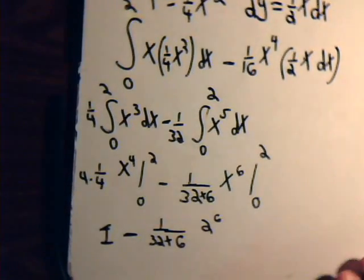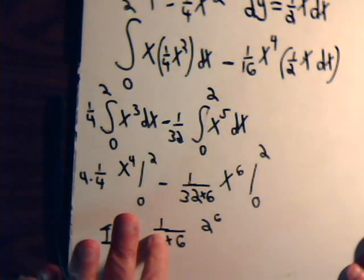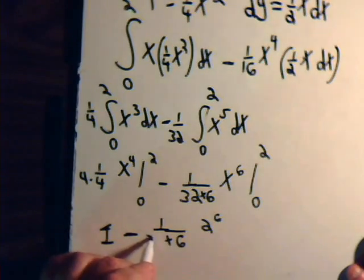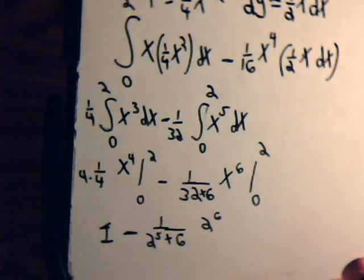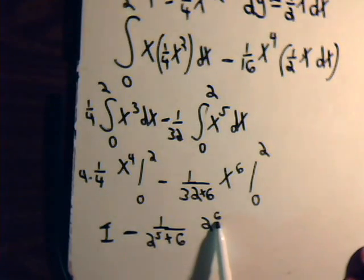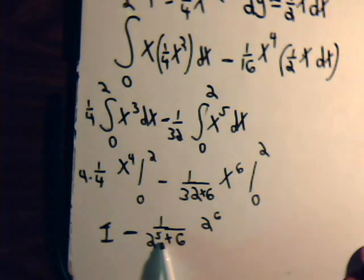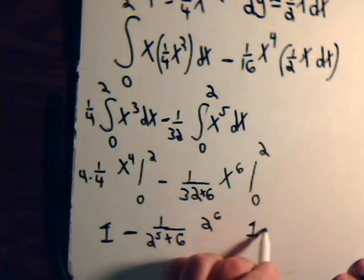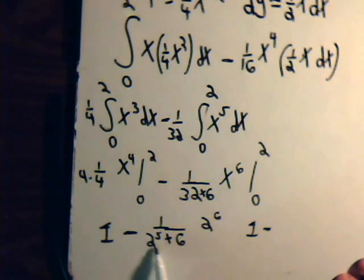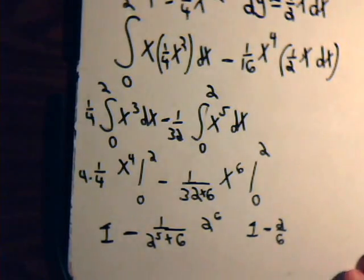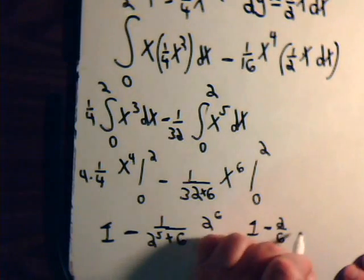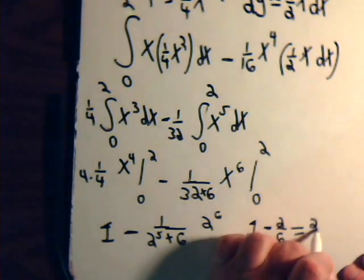And then, here we have two to the sixth power. Now, thirty-two, that's two to the fifth power. So, this is two to the fifth. So, here we have two to the sixth divided by two to the fifth. That's two. So, you have one minus two over six. Well, that's one minus one-third. That equals two-thirds.